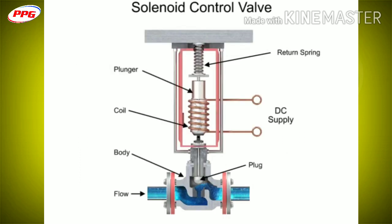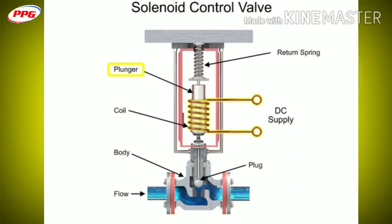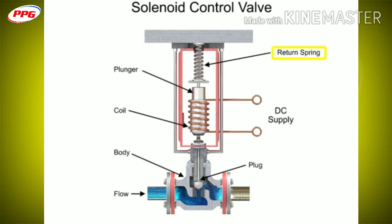For on-off control of the valve, a solenoid is used to actuate the valve to a fully closed or fully open position. Applying current to the coil generates a magnetic field that moves the plunger downward against the return spring. With zero current applied to the coil, the spring pulls the plunger upwards to the fully open position for a normally open state control valve.